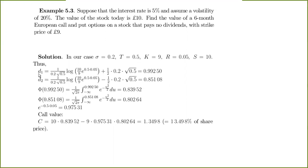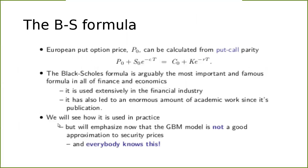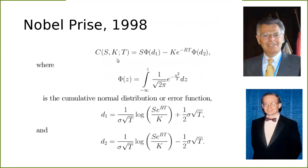The first step is to find d1 and d2 according to the formula. After that, we find the cumulative distribution function values for d1 and d2. We can use table values, Excel, or compute the integral directly. Then we can write out the Black-Scholes formula as shown on this slide.